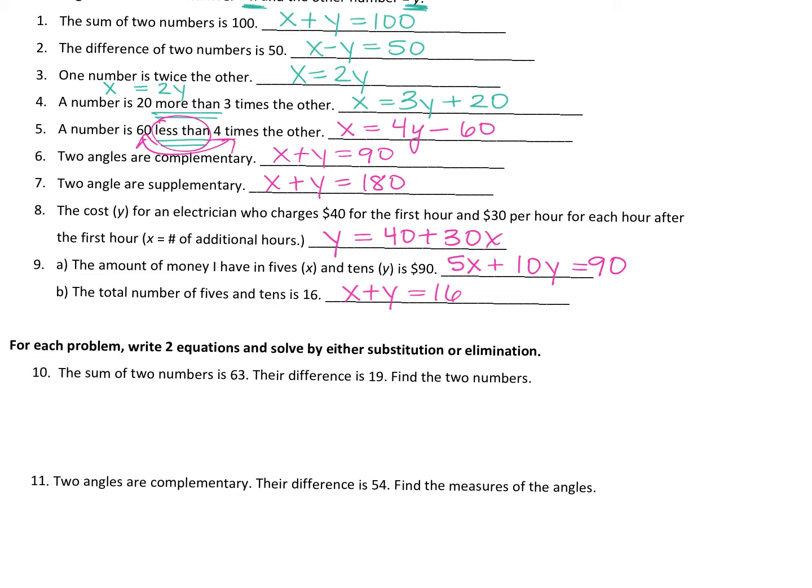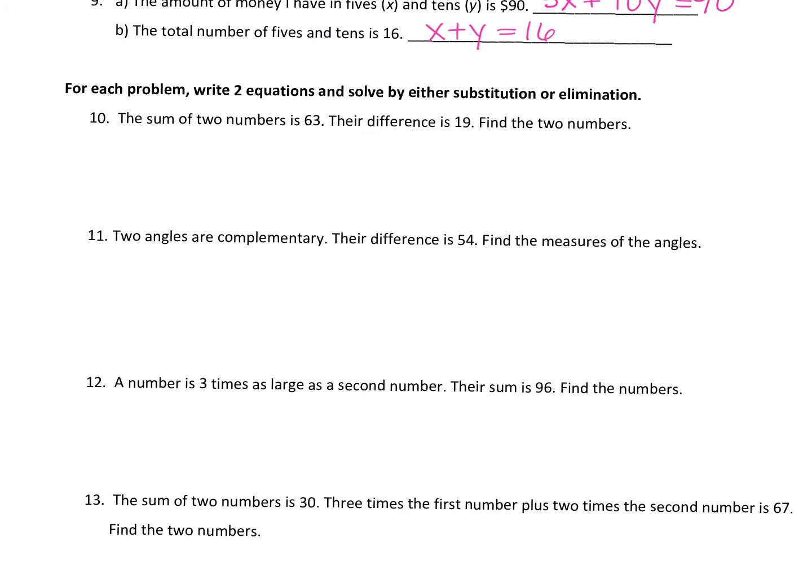So x plus y equals 16. Okay, so notice there's no dollars with those ones because we're talking about how many bills there are. x, $5 bills, and y, $10 bills, is 16 total bills. Okay? Okay, so that's just to get you back in that mode. Now that we're back in that mode, we're gonna write systems and solve those systems of equations. Okay, so the first part is the new part, right? How do you write the system? The solving of the system should feel exactly like what we've done in the last two days of class.